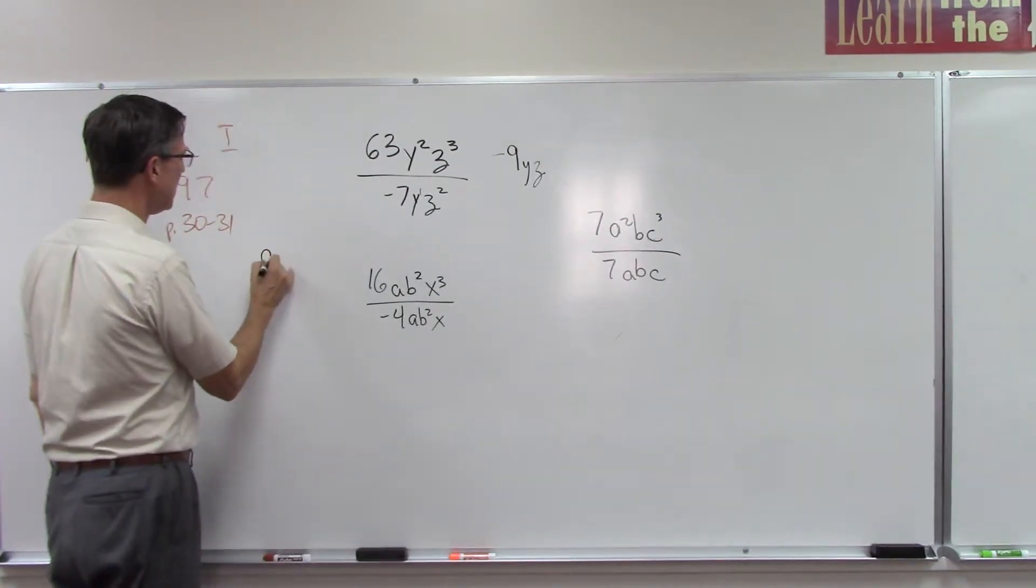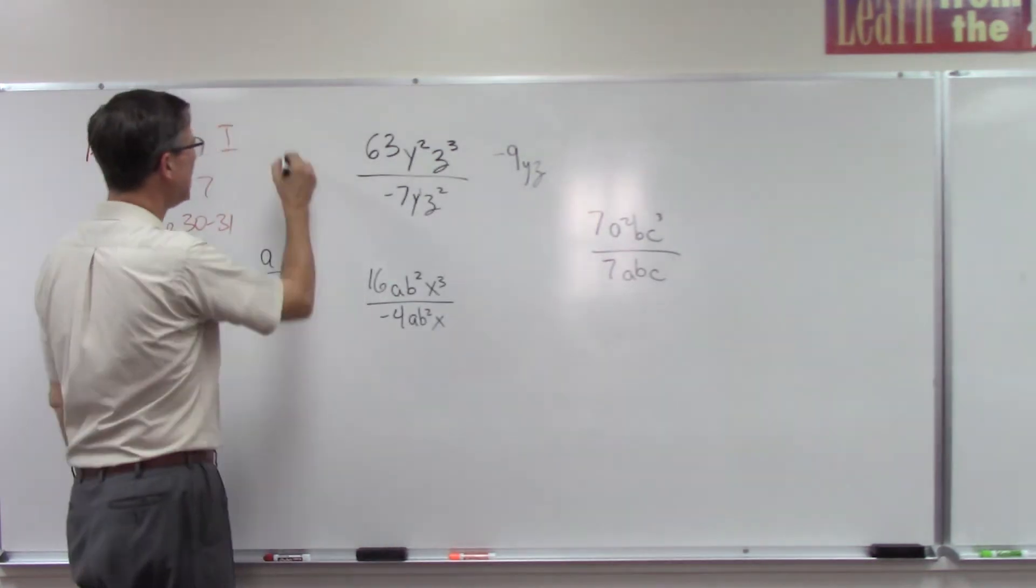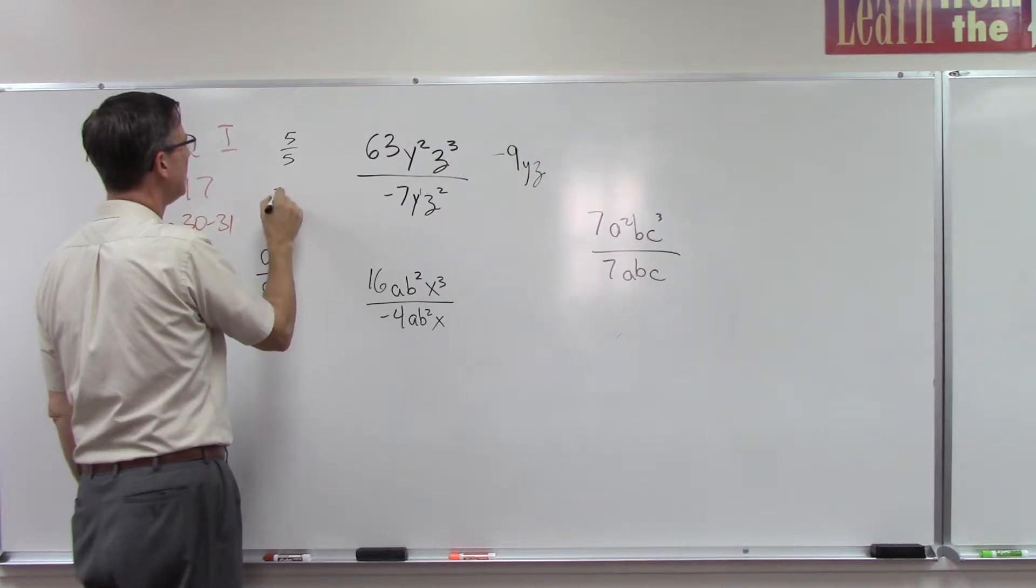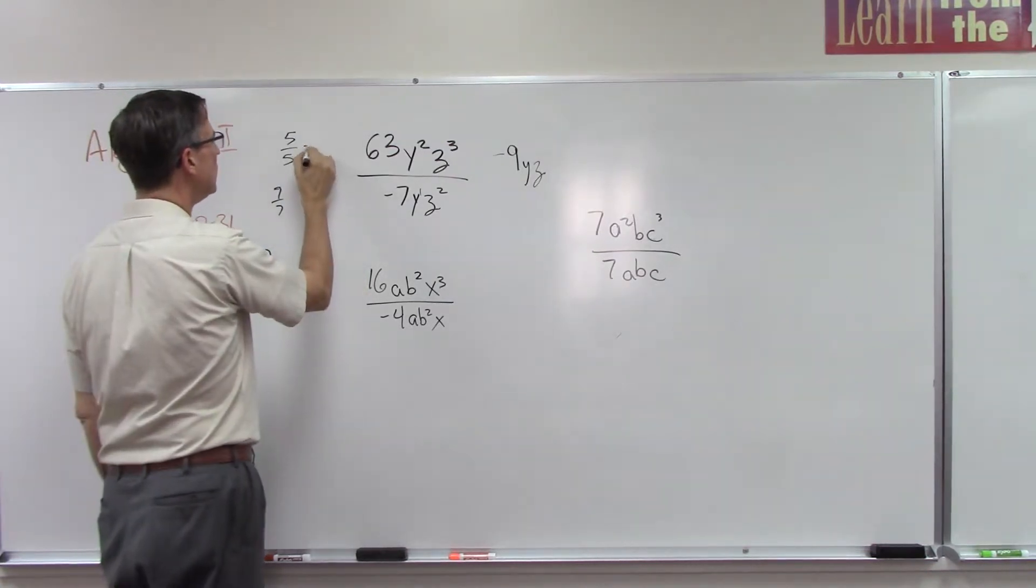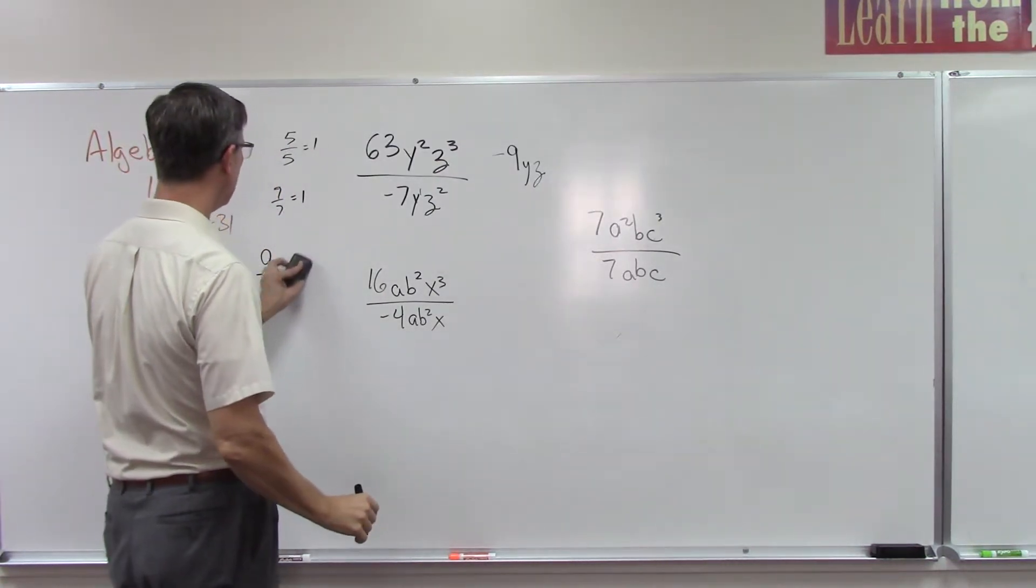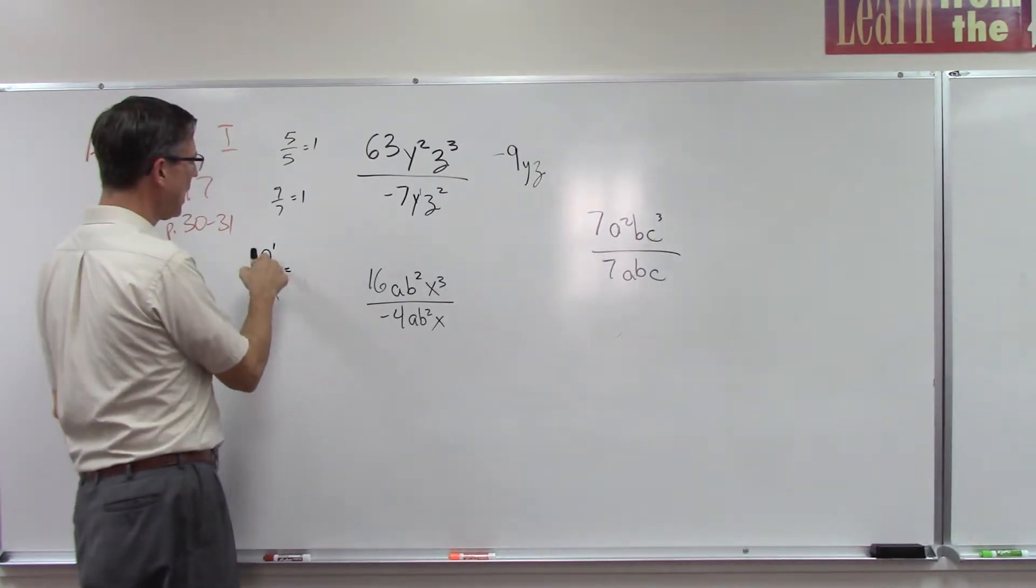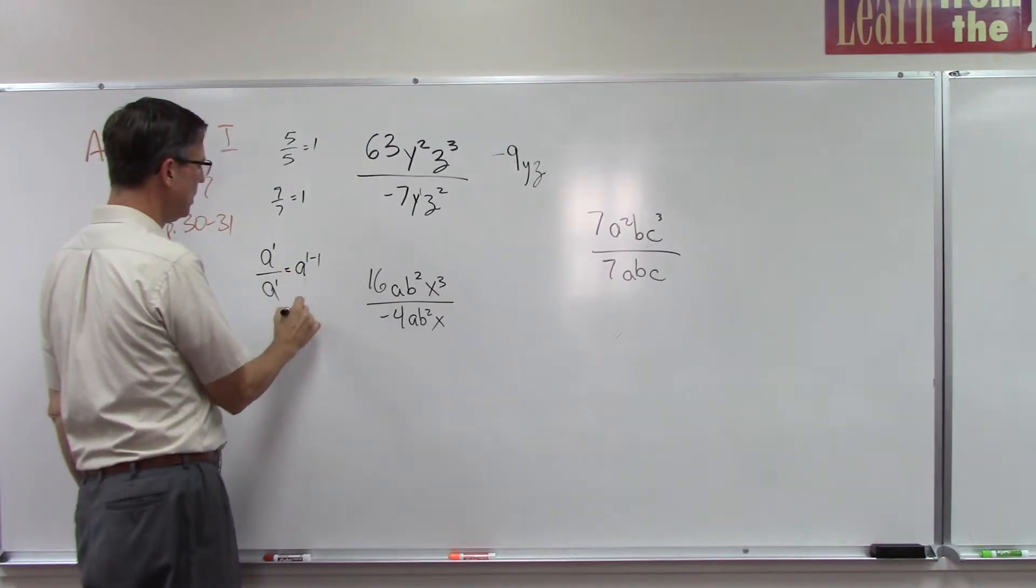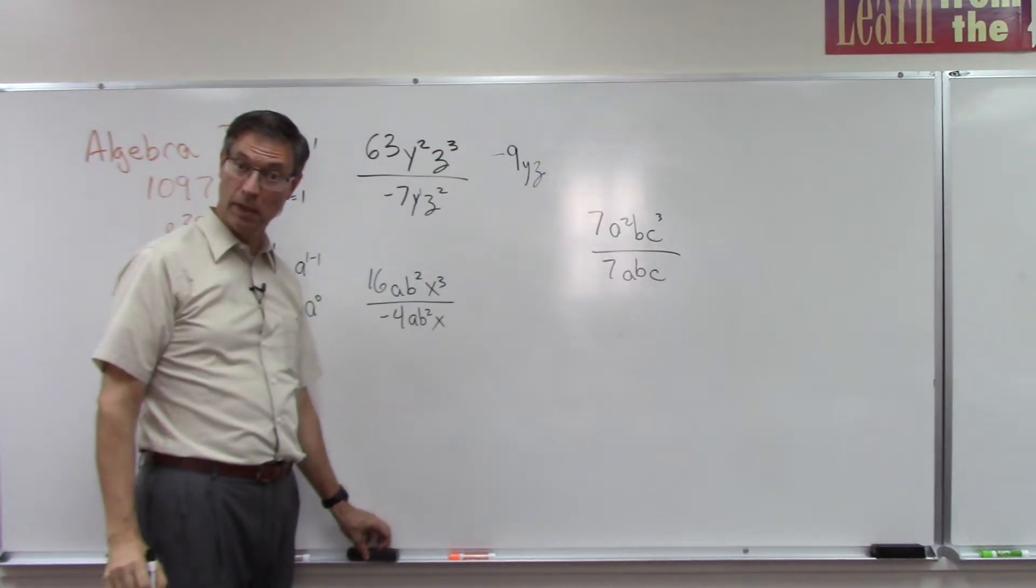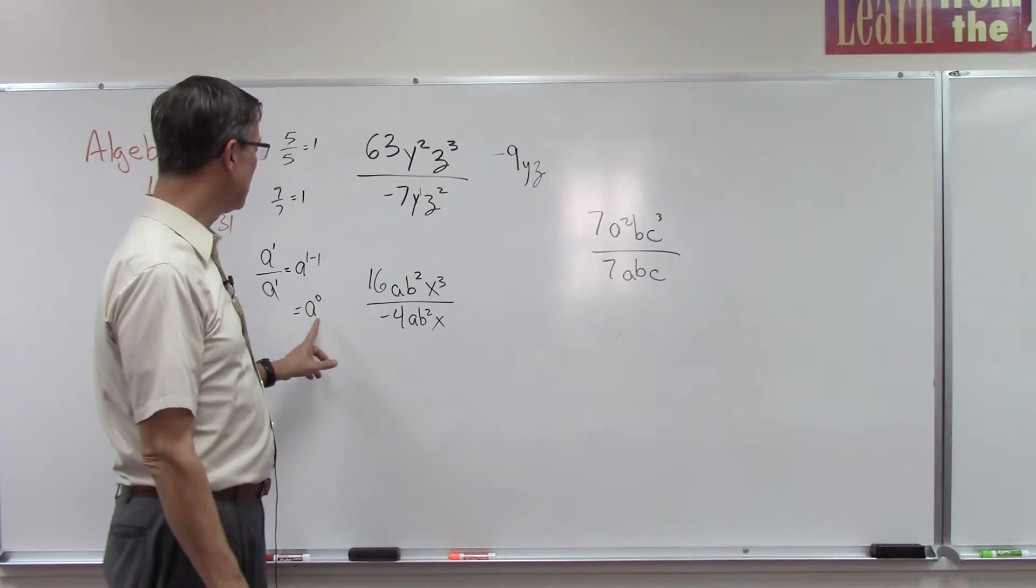a over a. What is anything divided by itself? What is 5 divided by 5? What is 7 divided by 7? It's always 1, isn't it? Okay, now let's see what happens here thinking about the exponents. If this exponent is 1 and this is 1, then when I subtract, this becomes a¹⁻¹, which becomes a⁰.